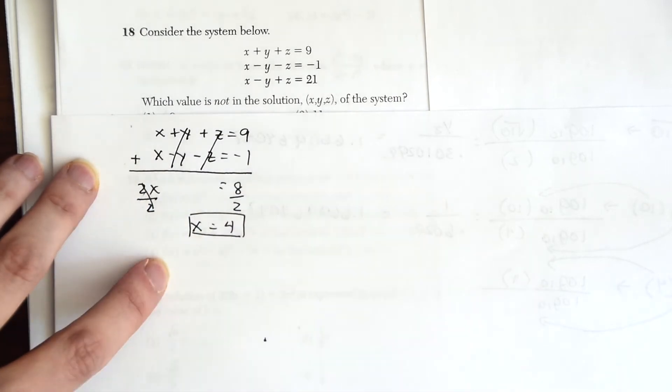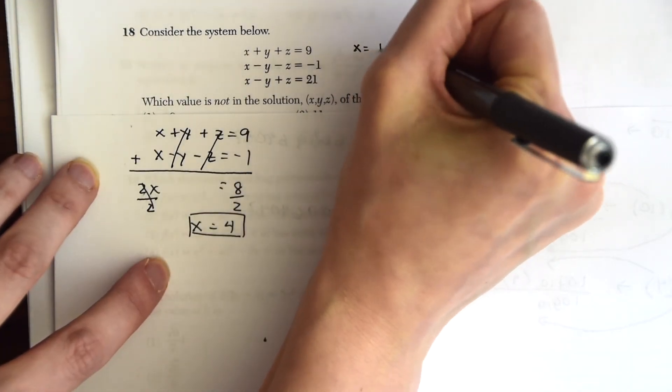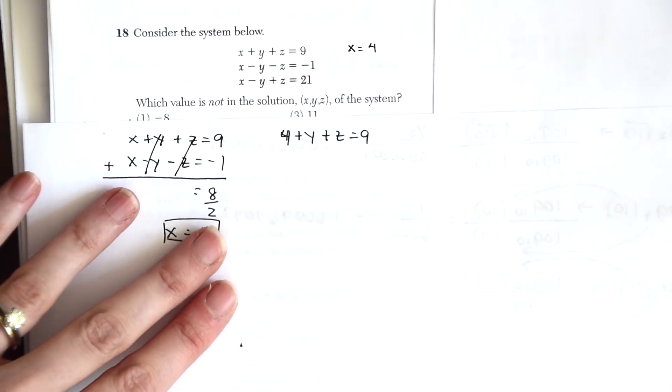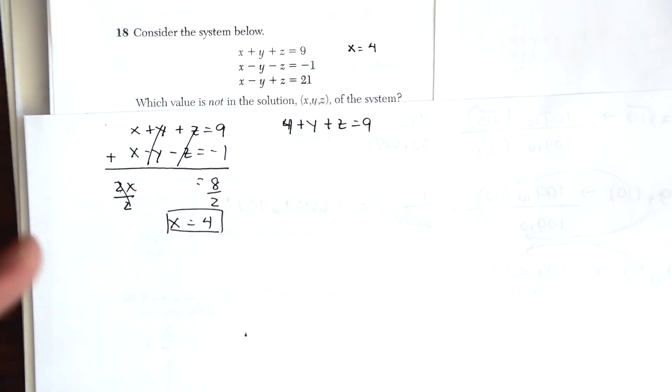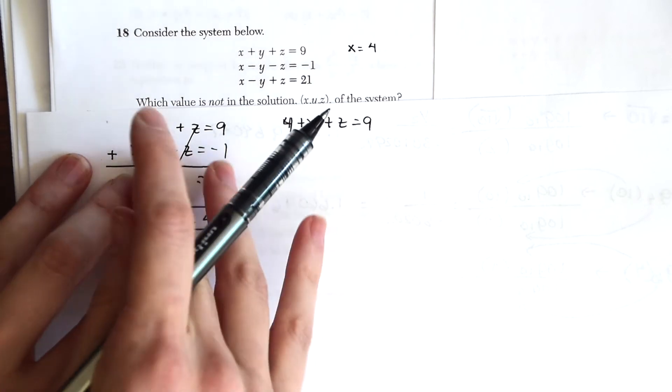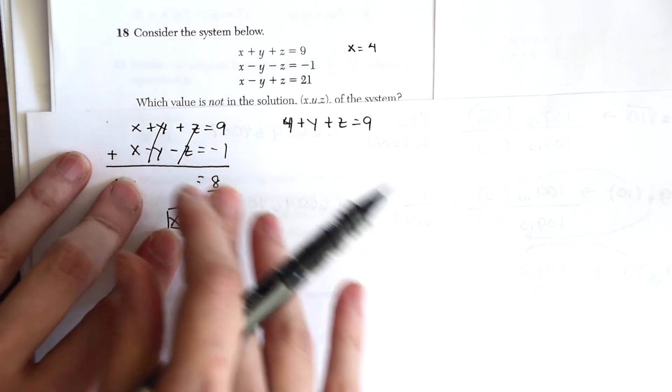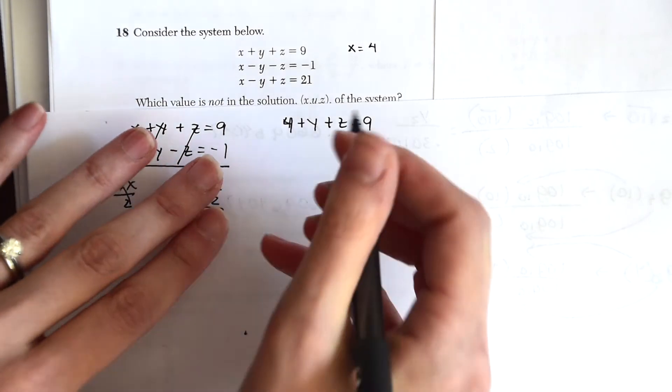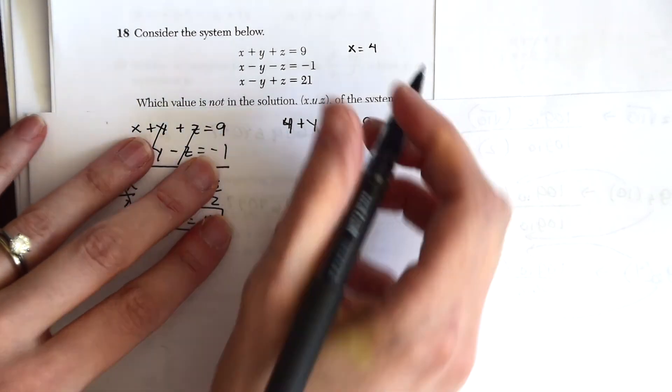So we know that 4 is going to be one of our answers. Let's write it down over here. And now, so we have x = 4, but we need to find y and z also. Okay, so now we'll take actually a different pair of equations because if we took the same pair, the y and the z's would cancel out again. So we don't want that to happen. We need a y or a z to find its value.